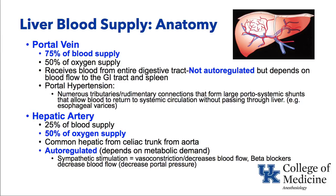The hepatic artery comes from the aorta, celiac trunk, and then the common hepatic artery. It is autoregulated — as metabolic demand goes up, blood flow goes up; as metabolic demand goes down, blood flow goes down. Compare that to the portal vein, which is not autoregulated. Sympathetic stimulation can result in vasoconstriction of the hepatic artery, which decreases blood flow to the liver. Beta blockers also decrease blood flow, and you've probably had patients with cirrhosis who are on beta blockers in an attempt to reduce portal pressures.